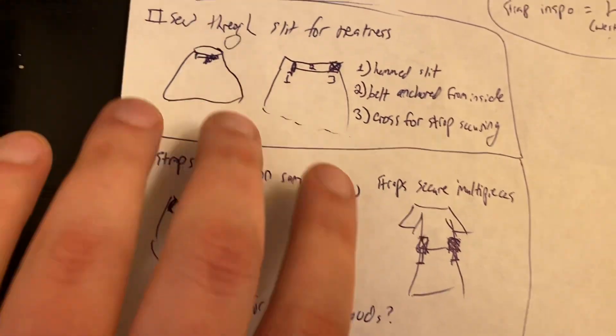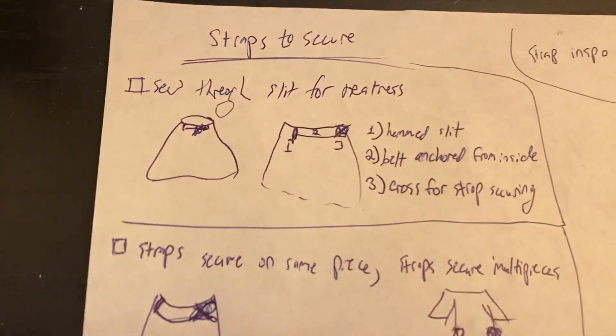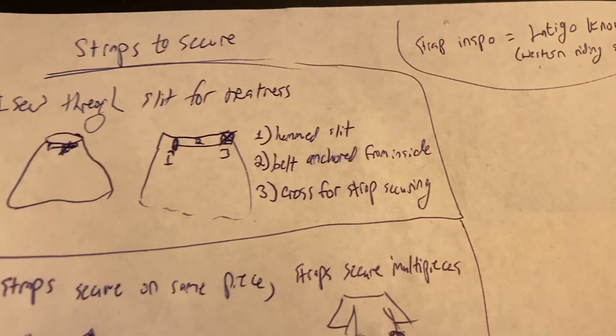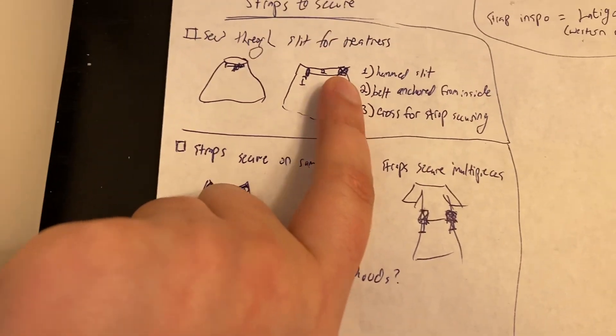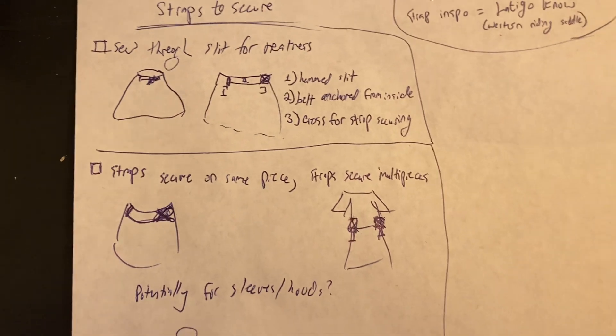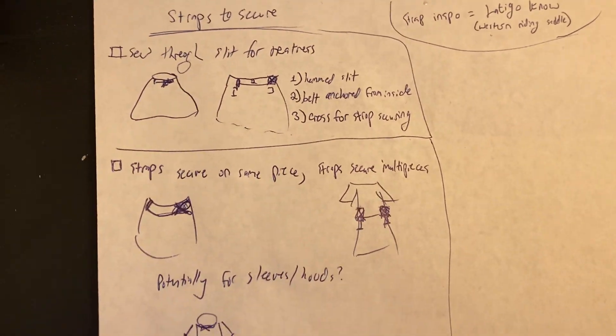So thinking I'd want to secure the strap on the inside of the garment and then have a nice little hem slit they'd come through. And then I think the cross strap will probably be the ultimate way to go just for securing it instead of just like the one kind of half C, half U-ish shape I got.